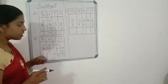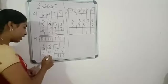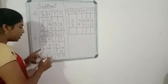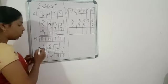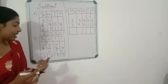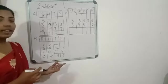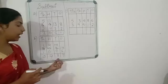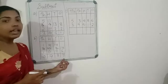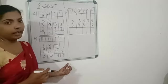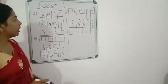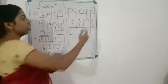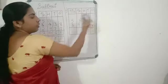Now nine minus zero is nine, and one minus one is zero. So the answer is a three-digit number: nine nine nine. Now let's move to the third question.